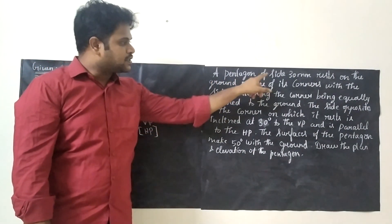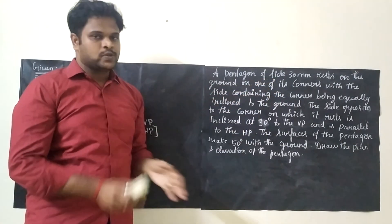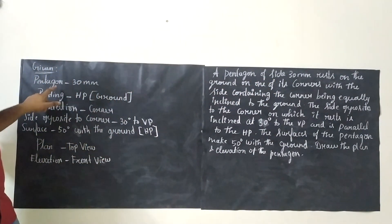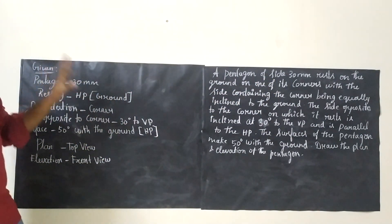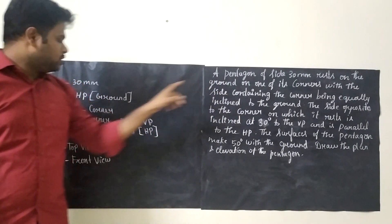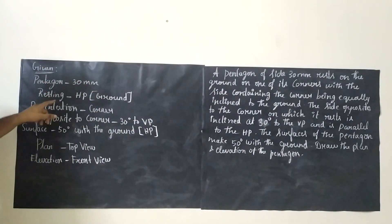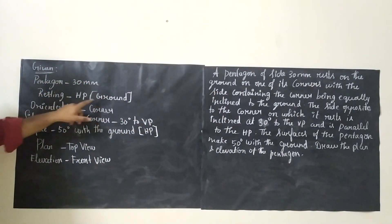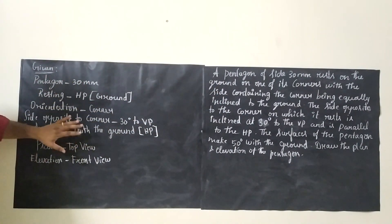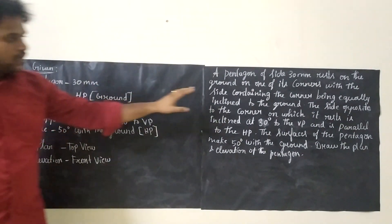A pentagon of side 30 mm. We are going to draw a pentagon of 30 mm. It rests on the ground, meaning it is on HP. So we are going to draw the basic diagram on HP.